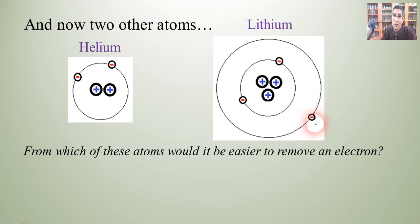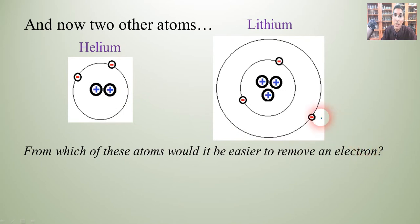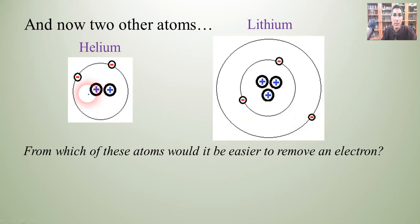As a result, that outermost electron is much farther away than the outermost electrons in helium, which means that the protons aren't able to exert as much of a pull on that outermost electron. So it's going to be easier to remove an electron from lithium than from helium.